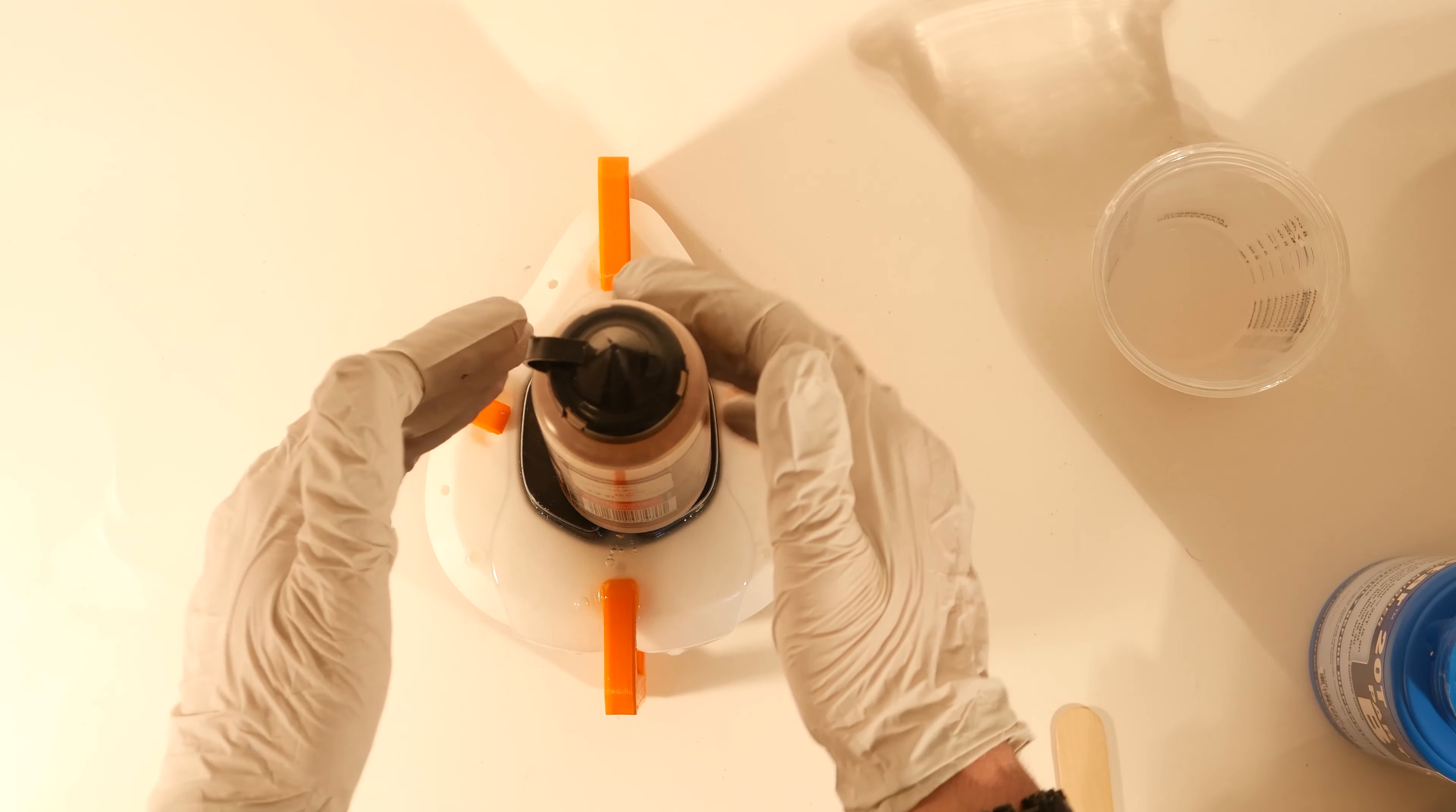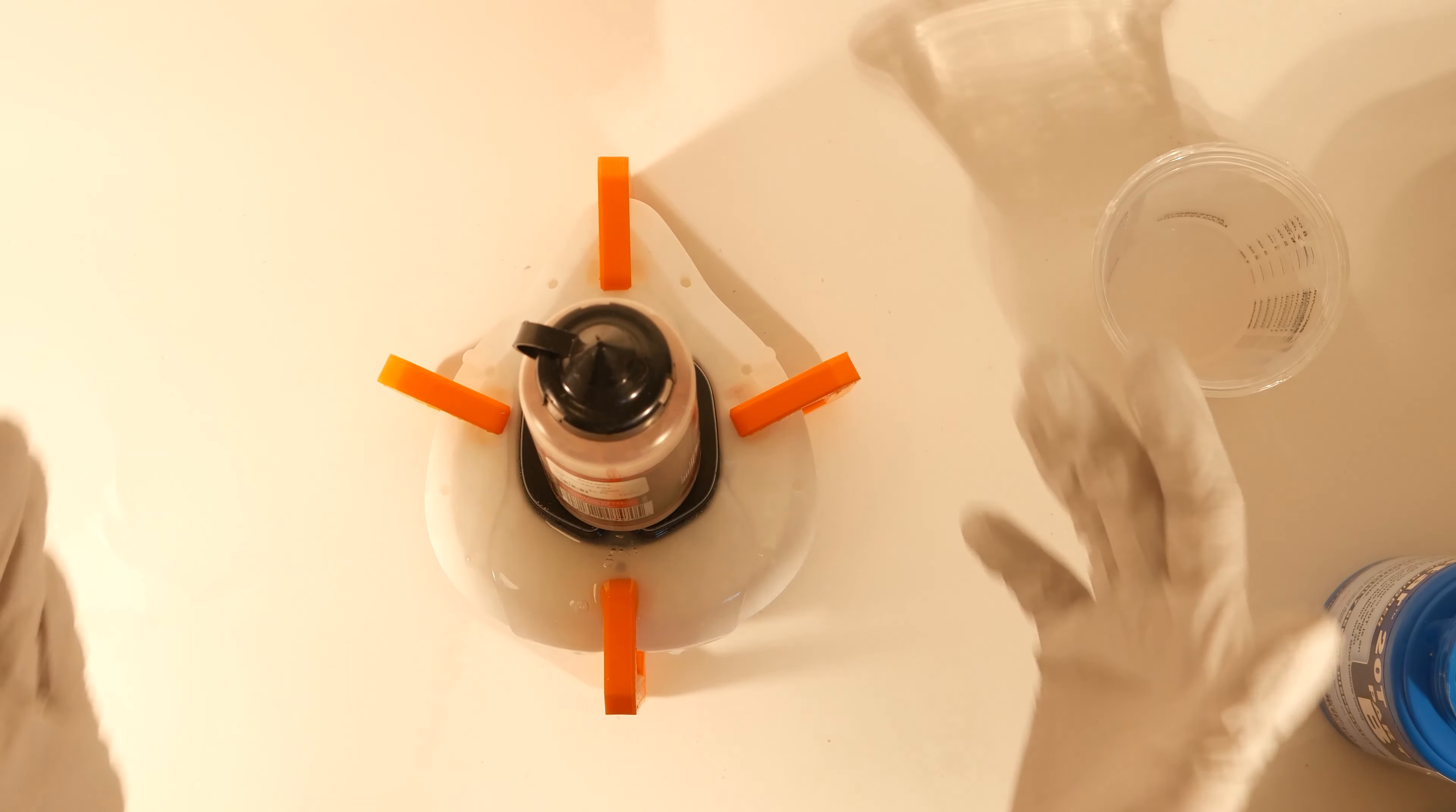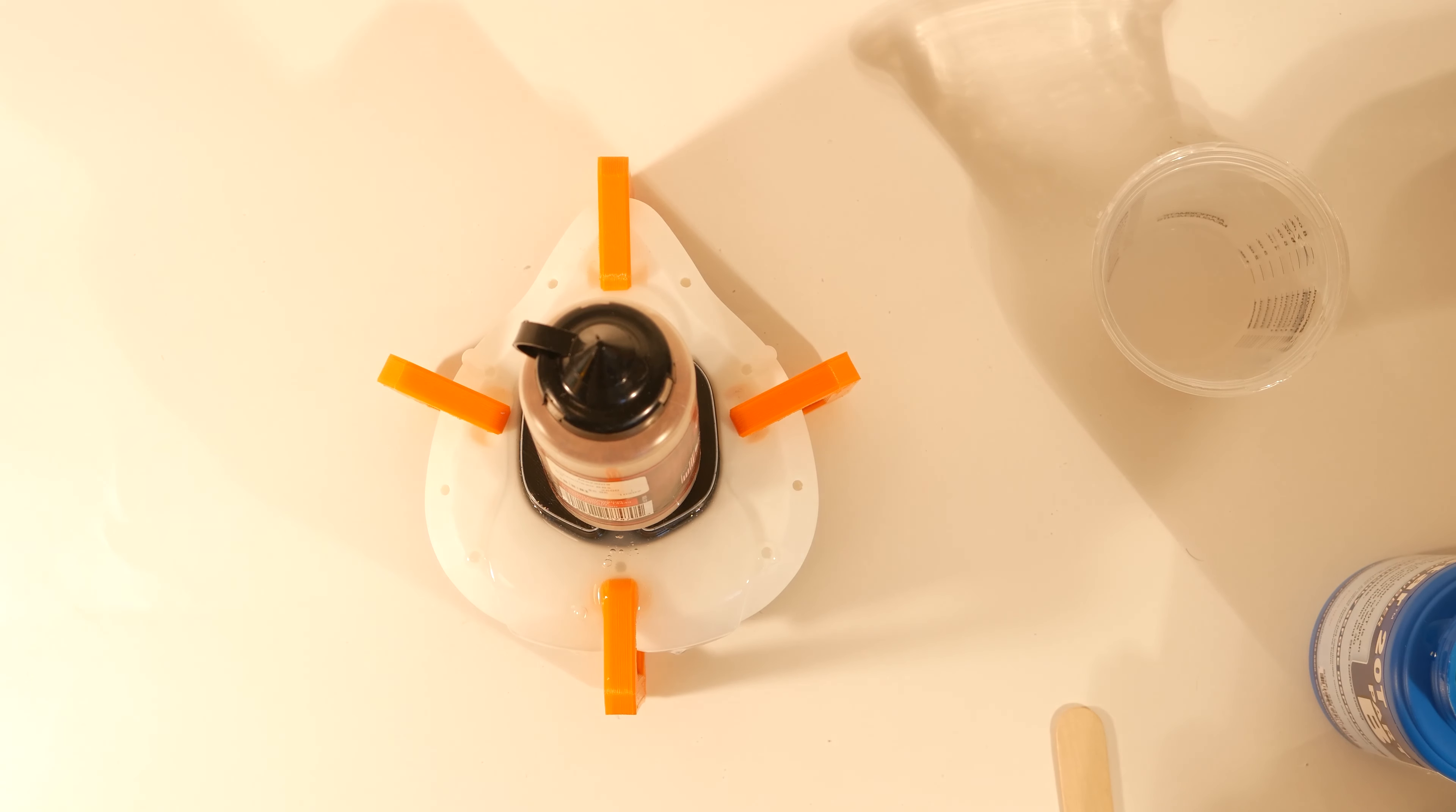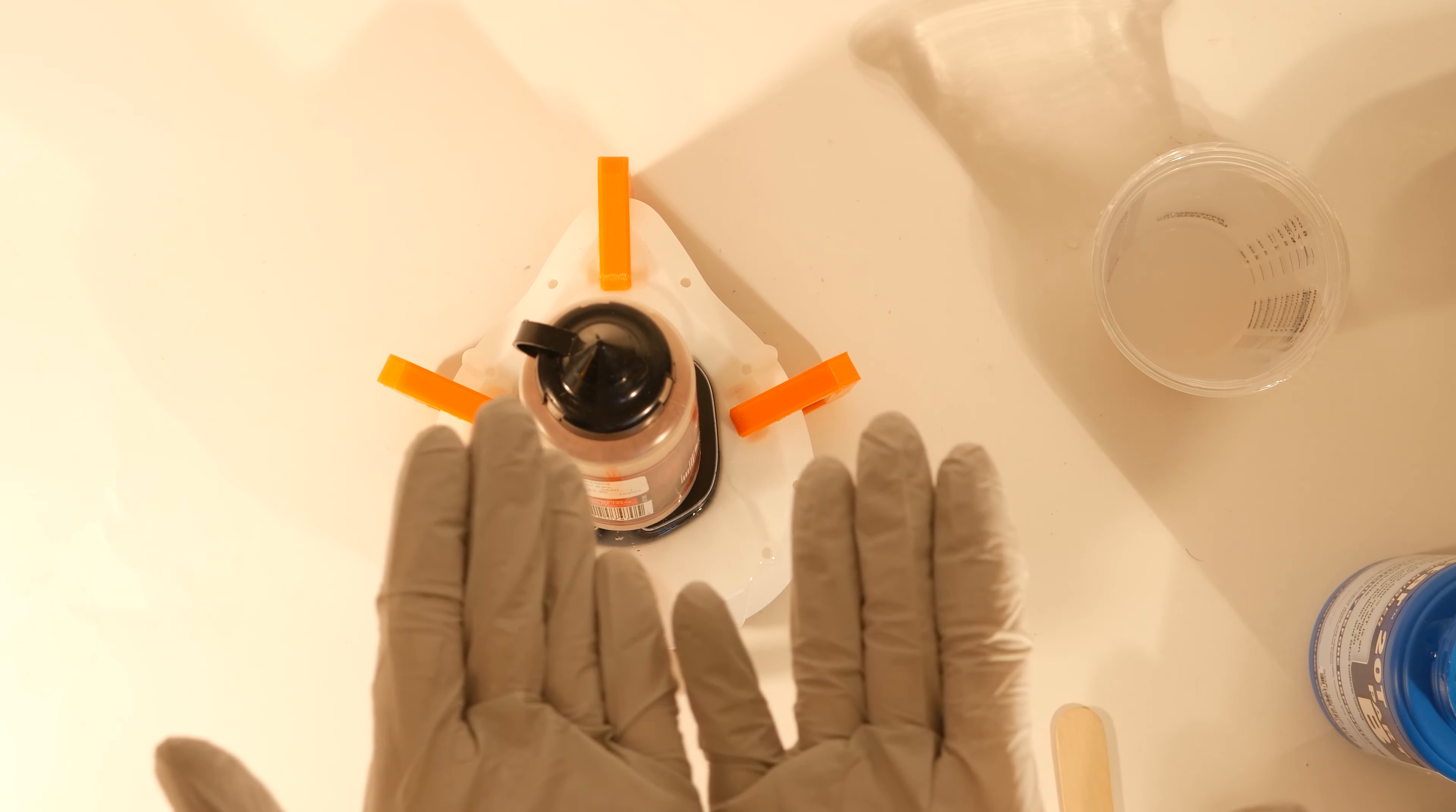And now you're going to want to add a weight to the top to make sure that this top mouthpiece stays down. I just use some steel BBs that I have. Anything that's weighted should work. Now it's already starting to solidify and starting to harden. We just reached the end of that pot life. So now I'm going to leave this for about a half hour and then I should be good to demold it.